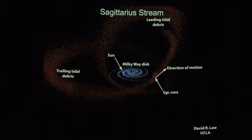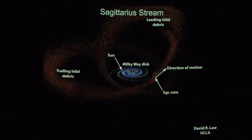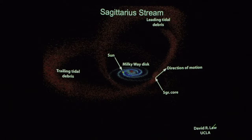A paper just came out showing basically the best simulation so far of the Sagittarius dwarf galaxy. Here is the disk of our Milky Way, which is about 100,000 light years across. The sun is about halfway from the center out to the edge of the disk. In addition to the disk and the central bulge, the Milky Way is also surrounded by what's known as the halo — a not-very-dense grouping of stars with extremely large orbits around the center of the Milky Way.